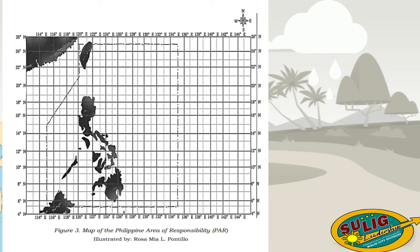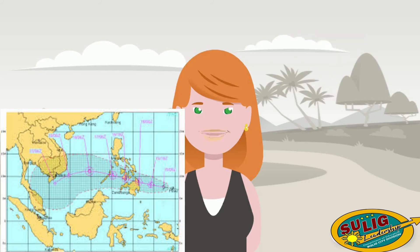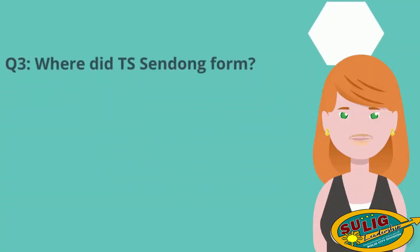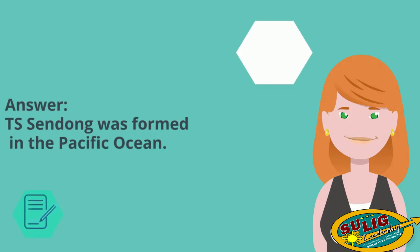Are you ready to track Tropical Storm Sindong's pathway? Let's review if we tracked it correctly. Excellent! You did a good job! Now, based on your tracking data of Tropical Storm Sindong, let's try to answer these questions. Question number 1: Where did Tropical Storm Sindong form? Tropical Storm Sindong was formed in the Pacific Ocean.